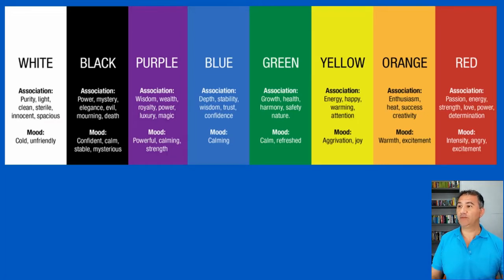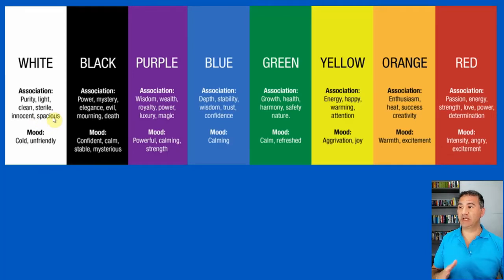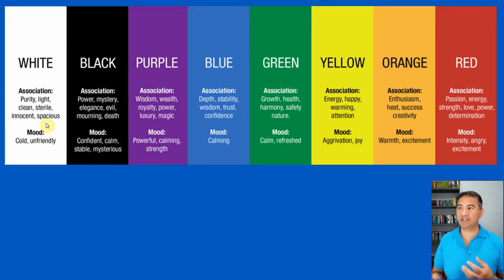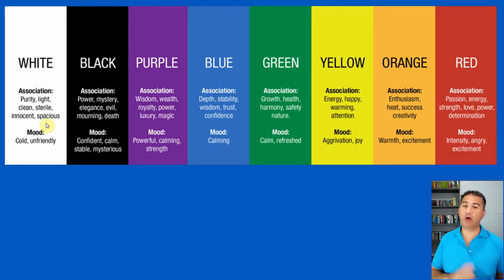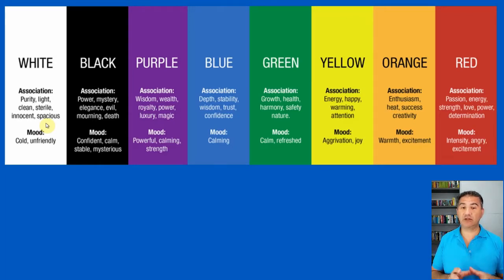As we can see here, we've got white and black, which are two very important colors we can use in our advertisement. White is associated with purity, light, clean, sterile, innocent, and spaciousness. The mood it evokes is cold and unfriendly. But balanced with black — where black is associated with power and mystery, elegance, evil, mourning, and death — the mood can also be confident and calm, stable, and mysterious. So when we're balancing these two together, it can really be an effective color tool for our advertisement campaigns.